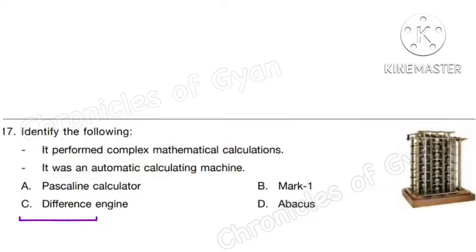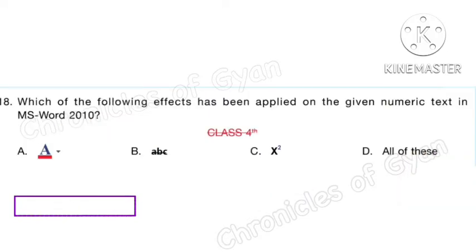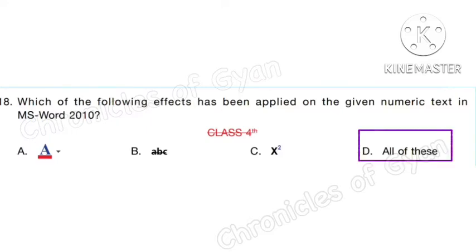Question 17. Identify the following: it performed complex mathematical calculations and was an automatic calculating machine. Correct answer is option C: Difference Engine. Question 18. Which of the following effects has been applied on the given numeric text in MS Word 2010? Correct answer is option D: all of these.